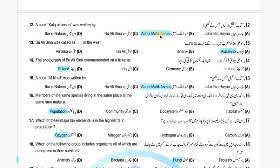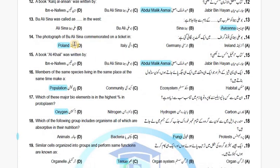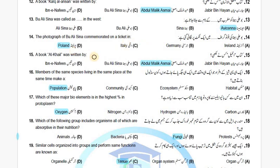Abu Ali Sina was called Avicenna in the West. The photograph of Abu Ali Sina is commemorated on a ticket in Poland — this is a picture shown in your book.